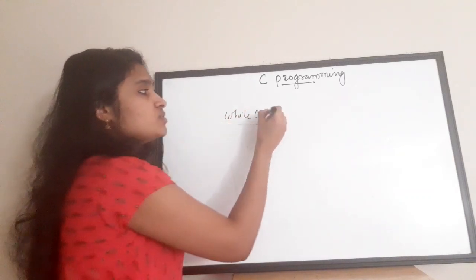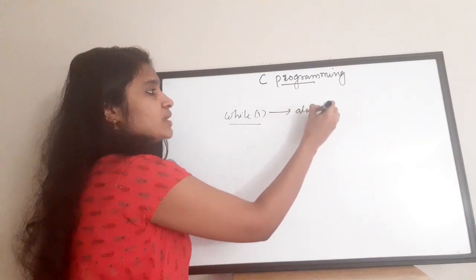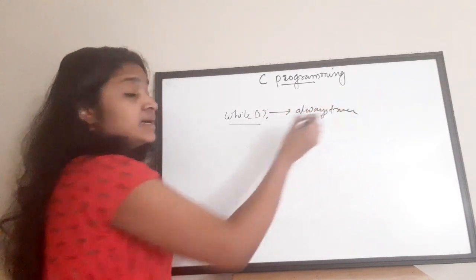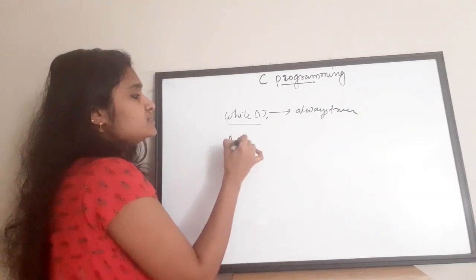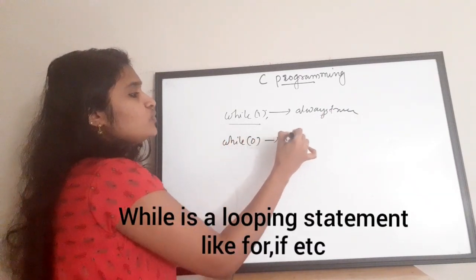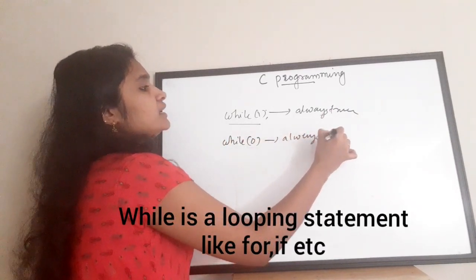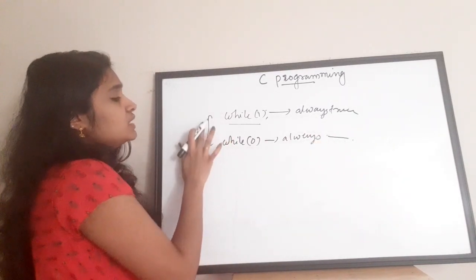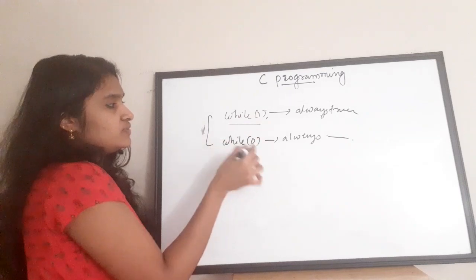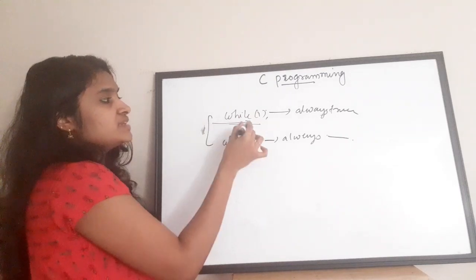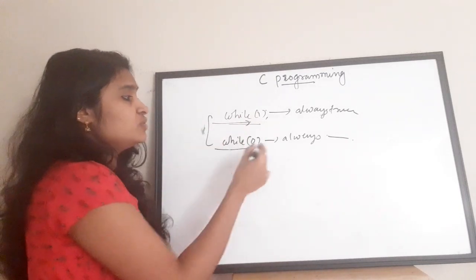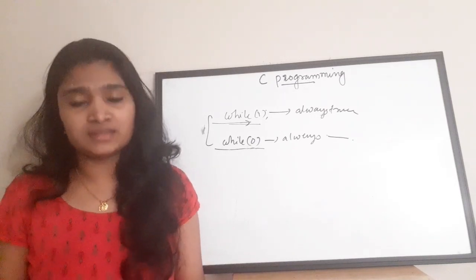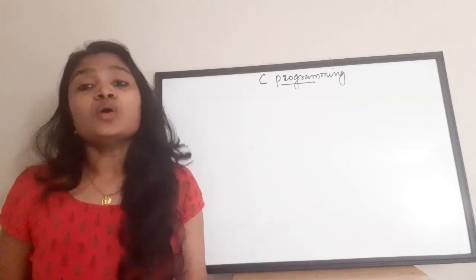The next question is: what is the difference between while(1) and while(0)? while(1) is always true, so it creates an infinite loop. while(0) is always false and will never get executed. These are opposite — while(1) loops forever, while(0) never executes.